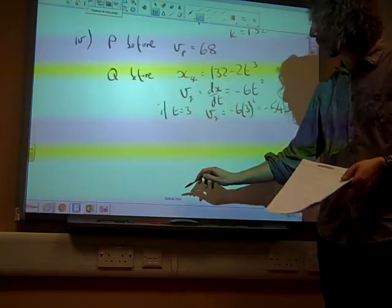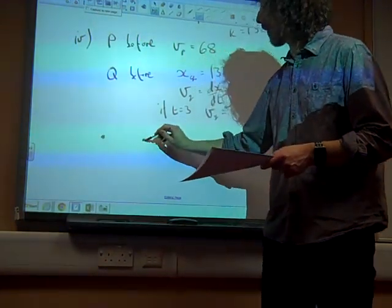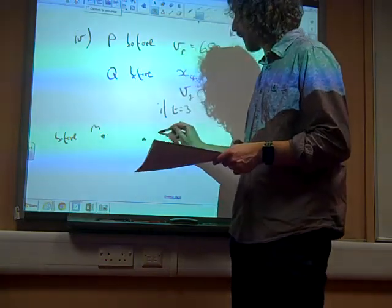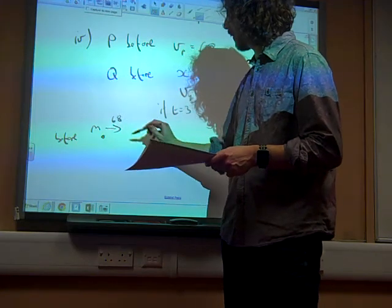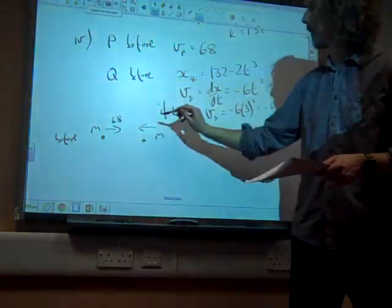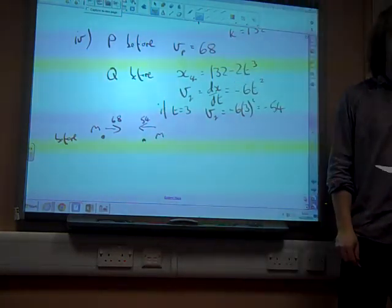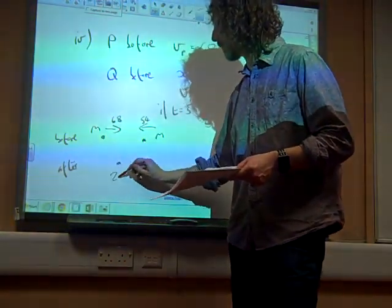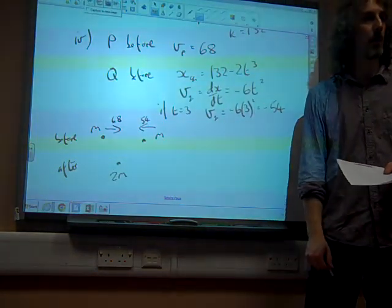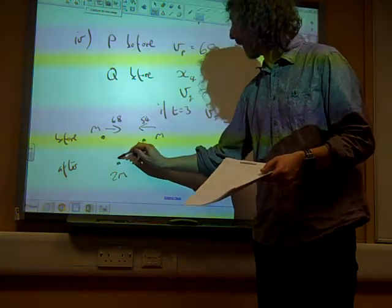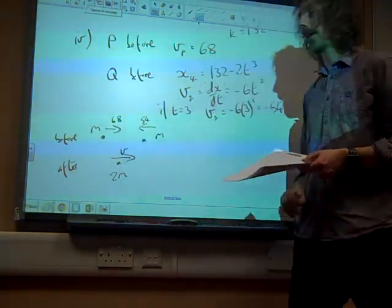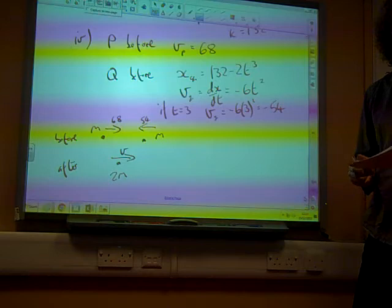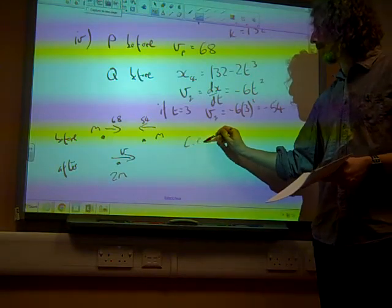Now I like when I do these momentum equations, I like my little diagrams. So here's my before diagram. I've now got these both have mass of m. I've got a velocity of 68, and this one has a velocity of minus 54, it's been in the opposite direction. After, the particles coalesce, so this mass is now 2m because they've joined together, and there is a velocity of v. And it must be in that direction because the speed of p was greater than the speed of q.